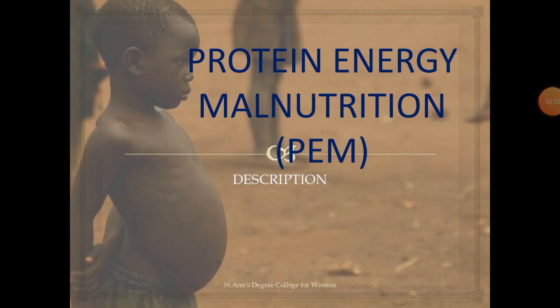Hi everyone, myself Verna. Today's topic for the class is Protein Energy Malnutrition (PEM). Malnutrition is mostly found in children because more nutrients are required for their growth and maintenance, and it is mostly found in developing countries like tribes and some African countries.